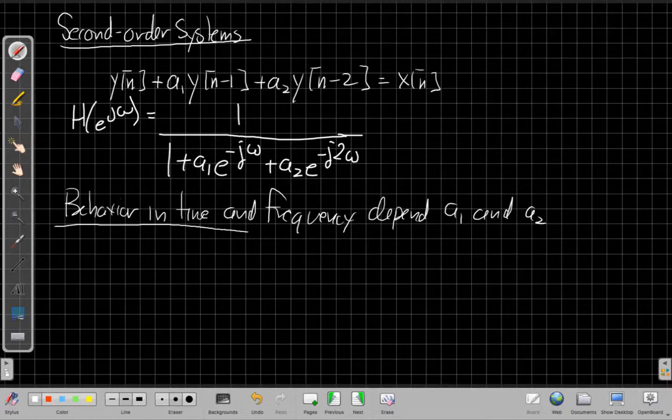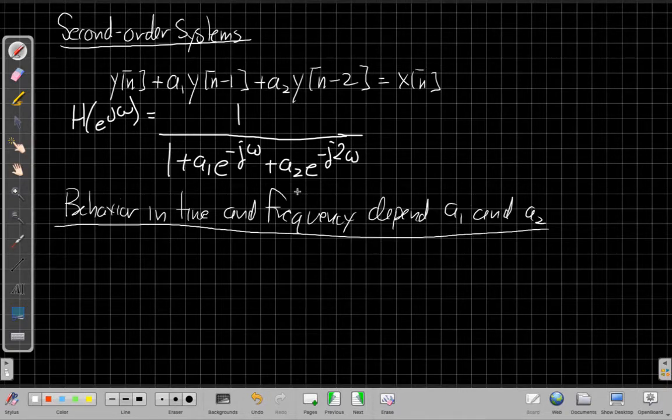And basically what it comes down to is when I factor this denominator, if I want to factor this into two first order terms, like I would if I was going to use partial fractions, when I do that, I need to, or it depends on what kind of roots I get when I do the factoring.